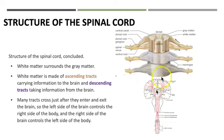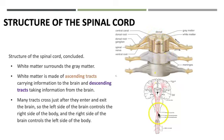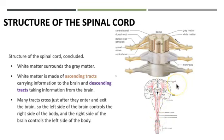There are ascending and descending tracts in the spinal cord found in the white matter — ascending tracts move up and descending tracts move down. Notably, some of these fibers cross over to the opposite side in the brainstem region. This is why you may have heard that the left side of the brain controls the right side of the body — it is primarily because of these tracts crossing to opposite sides.